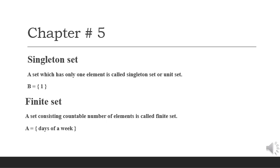The next one is finite set. A set consisting of a countable number of elements is called a finite set. For example, set A is the days of a week — there are 7 days in a week, so they are countable and limited. This is an example of a finite set.